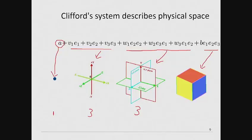Note that we have one scalar, three vectors, three bi-vector planes and one tri-vector volume. This totals eight elements.